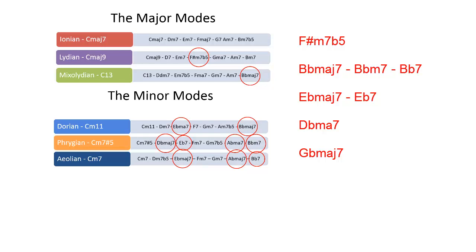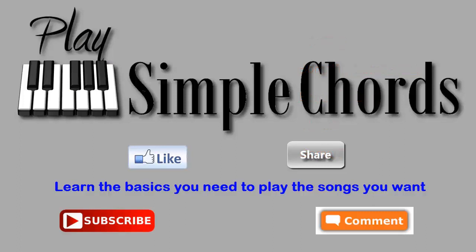These modes can be used to create half-step approaches from above or below to a target chord — that's one method of chord substitution using passing chords. You also saw examples of using mode chords to replace chords in the progression. All of that will be expanded upon in future lessons. I hope you found this helpful. Simple chords are the building blocks for making advanced chords, and I hope these tutorials are helpful on your musical journey. Please like, subscribe, and share with others who want to learn piano.